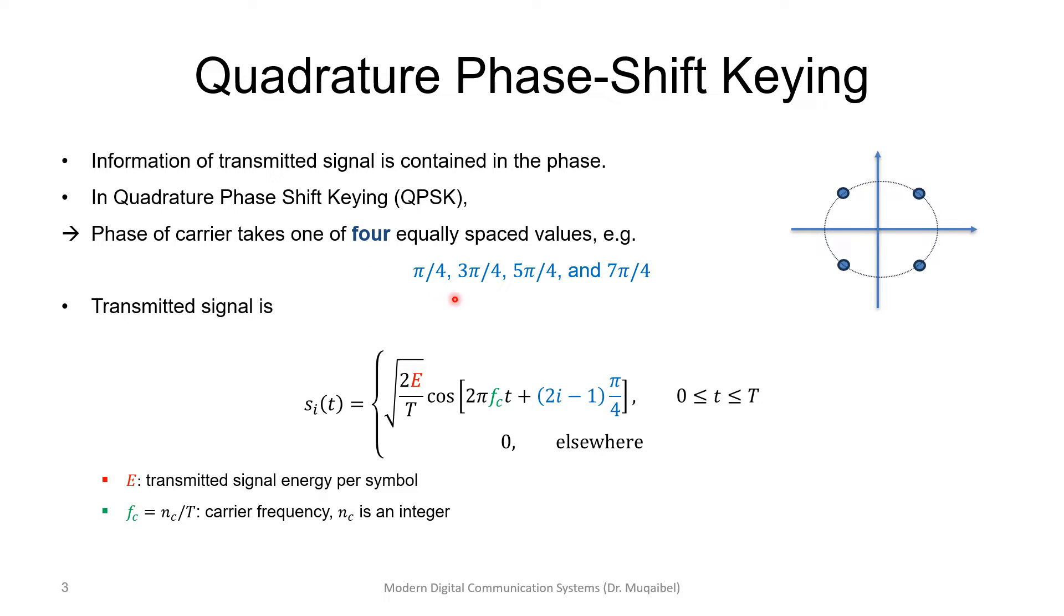In QPSK, the phase carries information, and we have one out of four possibly equally spaced values, like for example, I could choose pi over four, three pi over four, and so on. Other possibilities to start from zero, and then pi over two, and so on. So the spacing between them is pi over two. We can write the transmitted signal for this example as s_i(t), where i goes from one up to four as a cosine function. It's a cosine signal with the following amplitude. Depending on the energy, I have square root of two E over capital T, where capital T is the symbol duration, and E is the energy of the symbol.